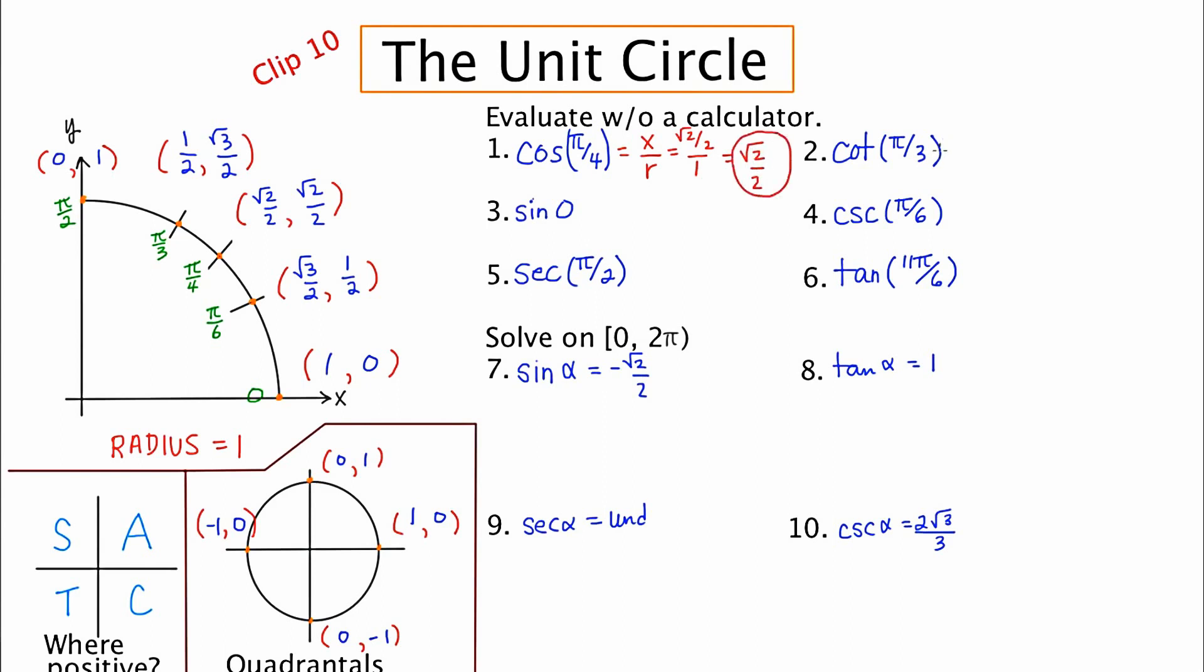Moving over to number two, cotangent of pi over three, cotangent is X over Y. So if we go to the pi over three ordered pair, which is up here, and we do X over Y, we get one half over root three over two. The twos cancel out, so we get one over root three, which is really root three over three.